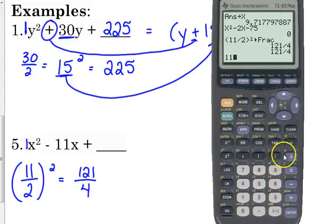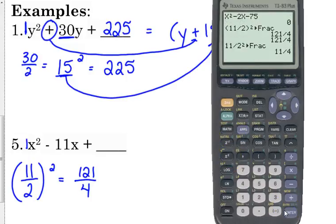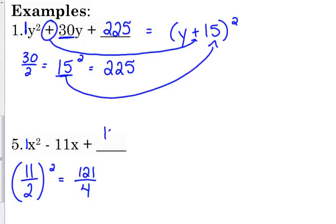11 over 2 squared. If you just type 11 over 2 and you square it, guess what? It's going to give you 11 over 4. It's only going to square the 2 because exponents come before division in the order of operations. So either square the 11 and square the 2, or put it in parentheses when you put it in calculator.